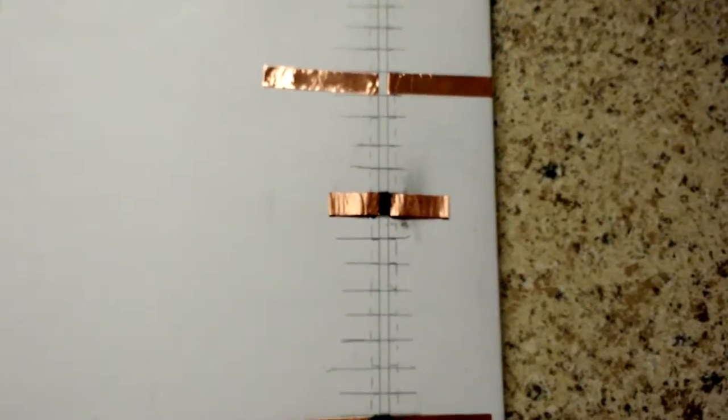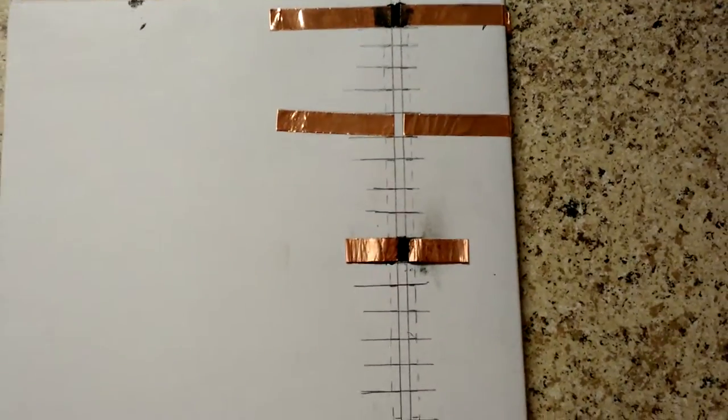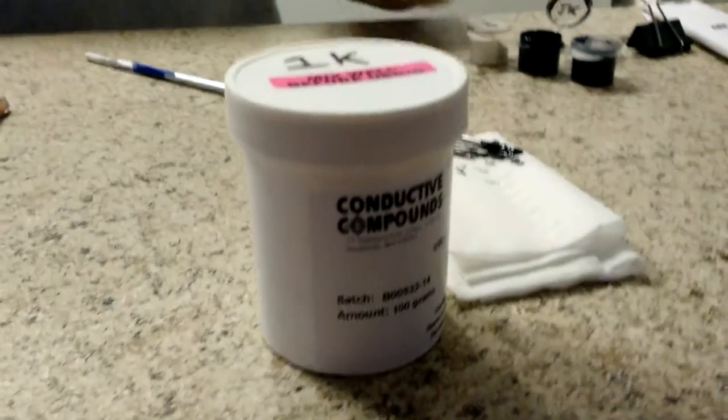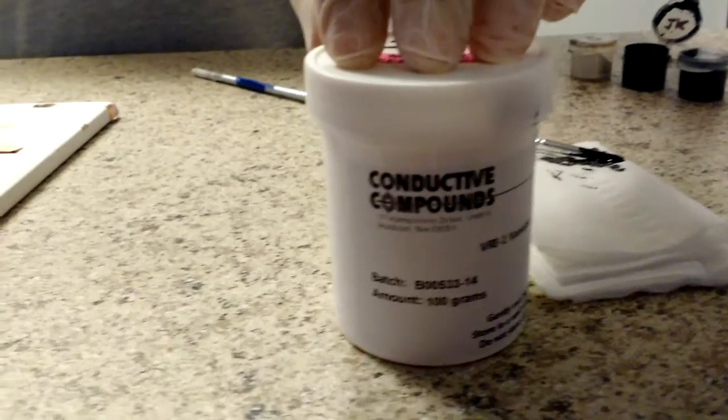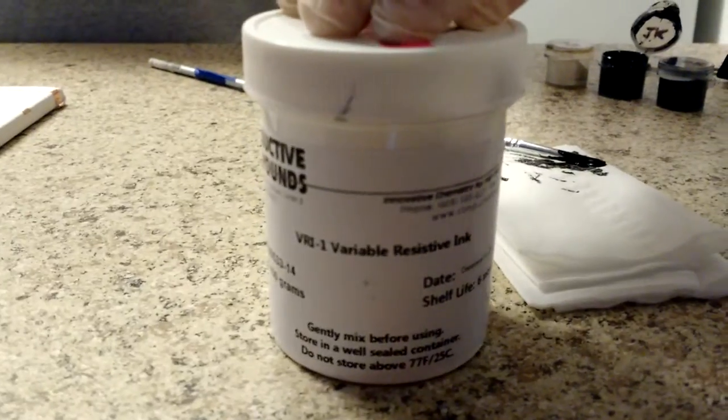The space we have in between copper tape is about two millimeters wide and this will offer optimal resistance values as per our VRI 1K ink. This is a carbon-based ink and it'll give us anything between one kilo ohm to ten kilo ohms of resistance.